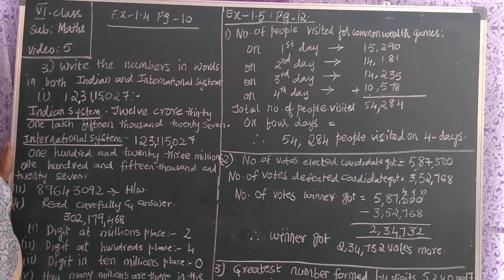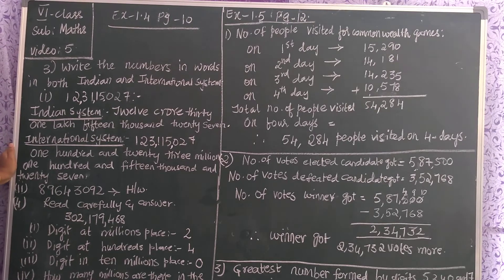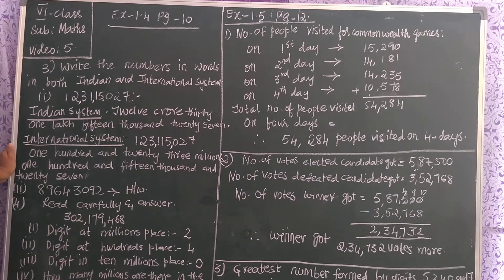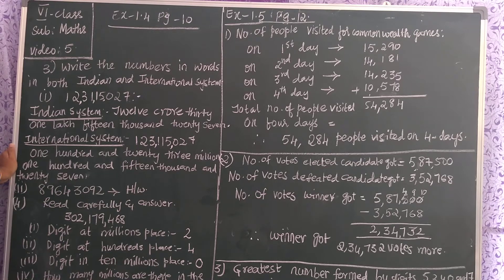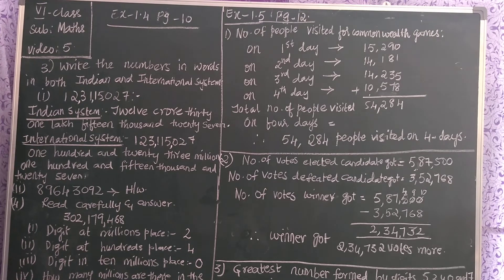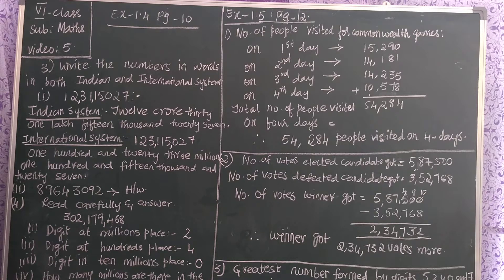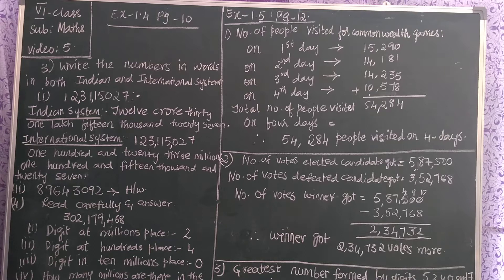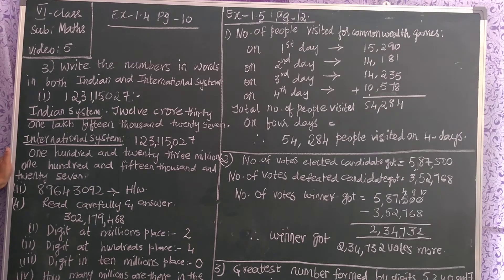Now, before that, we have learnt what is Indian system and what is international system. In Indian system we learnt ones, tens, hundreds, thousands, ten thousands, lakhs, ten lakhs. Now in international system we learnt the place values also.